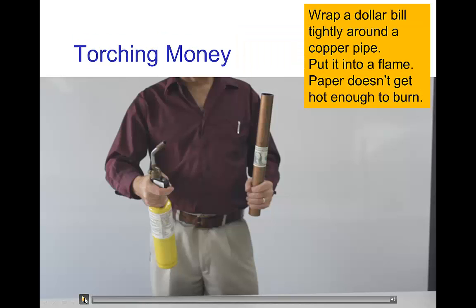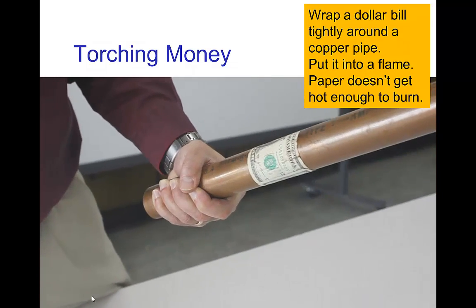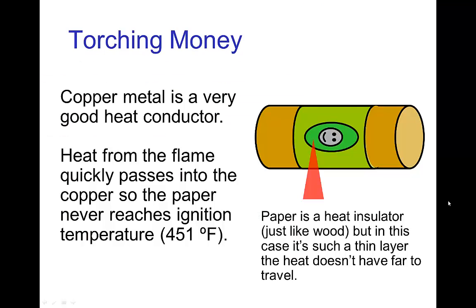Let's look at a little demonstration. I'm going to wrap a dollar bill tightly around a copper pipe and apply a blowtorch. You see that the money was not burned because copper is a very good heat conductor. The energy delivered by that high temperature flame very quickly passed out of the paper and into the copper. Paper is a heat insulator like wood, but in this case, because it's such a thin layer and it's in tight contact with the pipe, the heat travels very easily from the paper into the pipe, and the pipe conducts the heat very quickly.